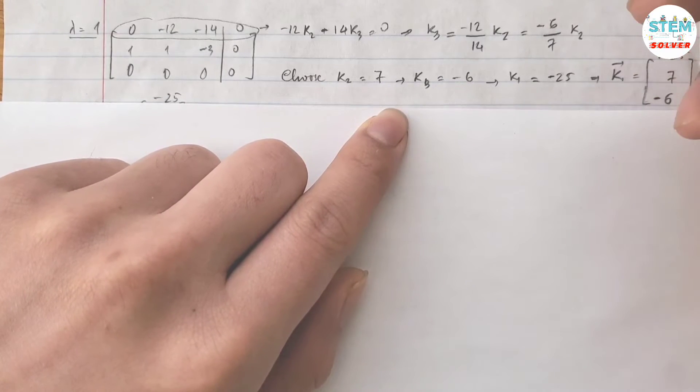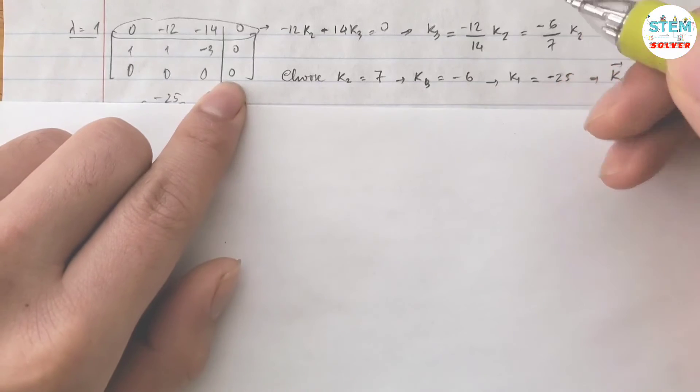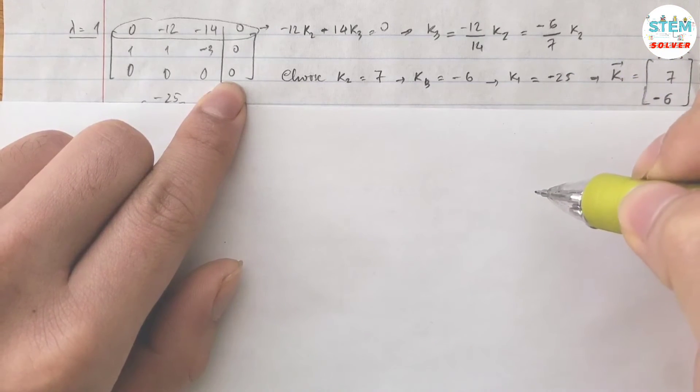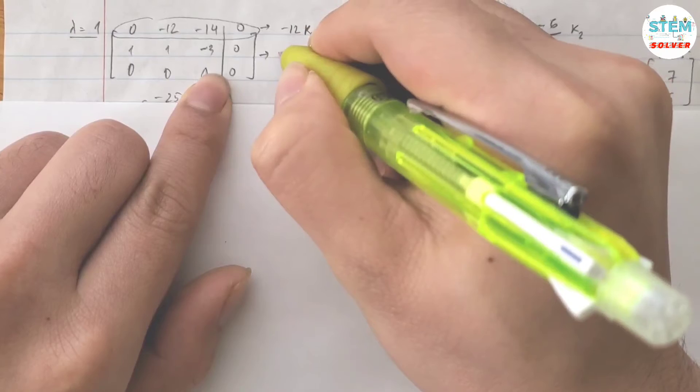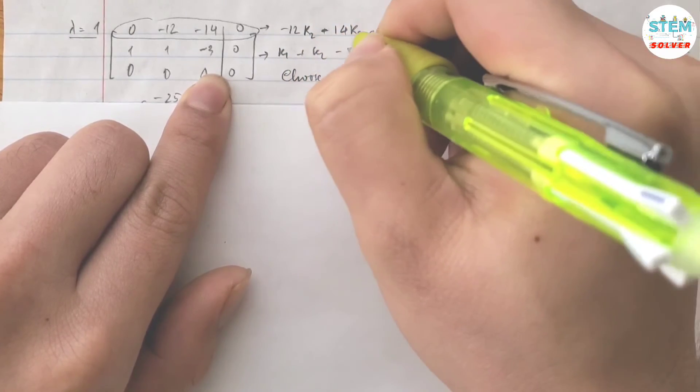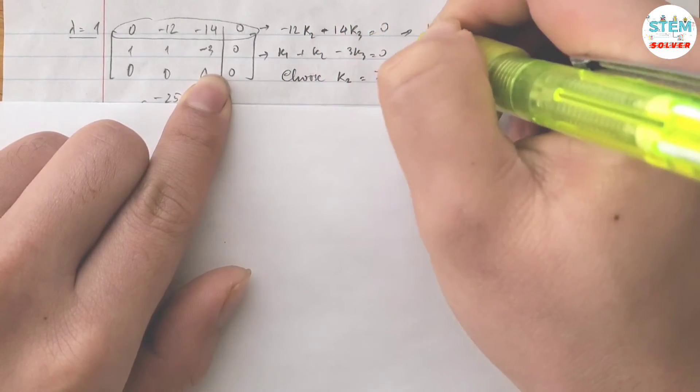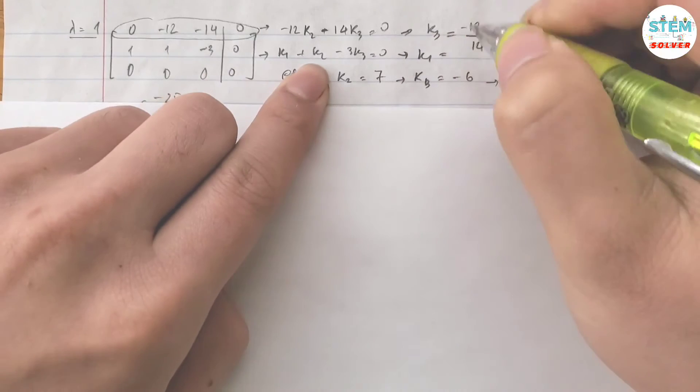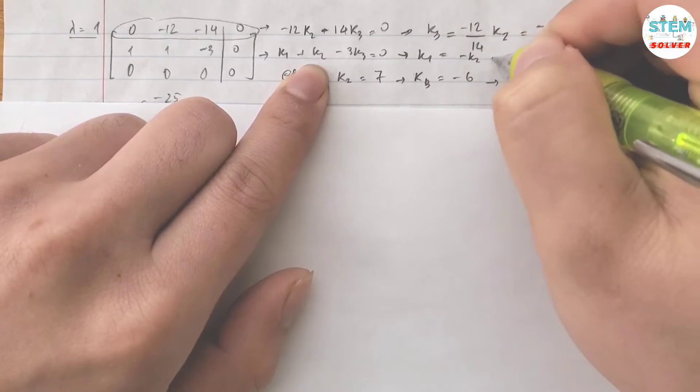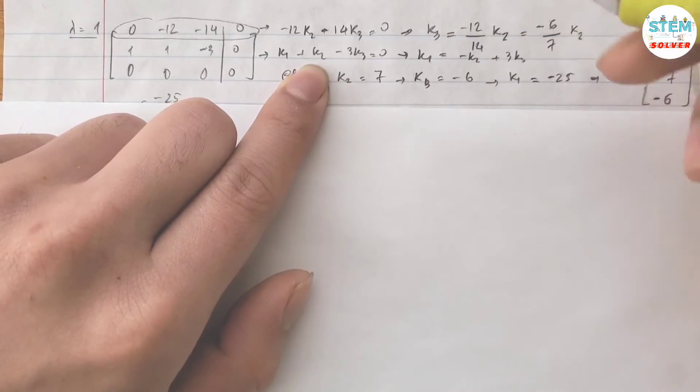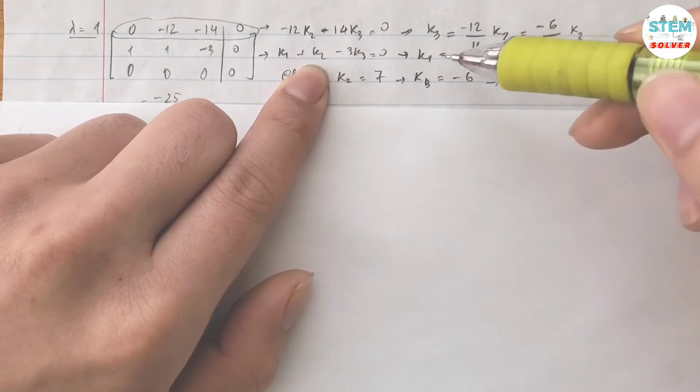And then from this equation, I have k1 plus k2 minus three k3 equals zero. So for k1, I have negative k2 plus three k3. Since I know k2, k3, I can solve for k1.